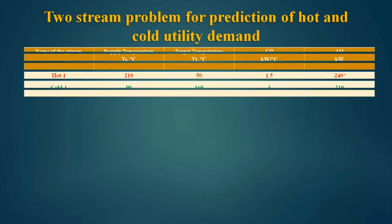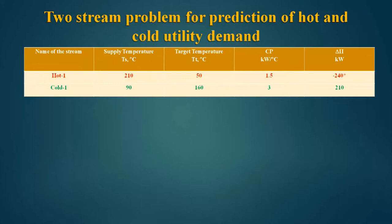Up till now, we have seen how to create a hot composite curve and how to create a cold composite curve. Now we will extract some useful information by plotting the hot and cold composite curves simultaneously, and we will find out what is the requirement of the hot utility as well as cold utility from these curves. We will also see what more information these curves communicate to us, starting with a two-stream problem for the prediction of hot and cold utility demand.